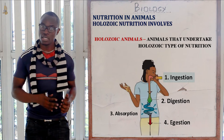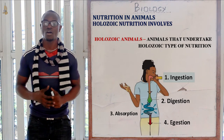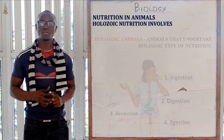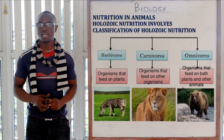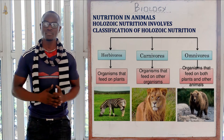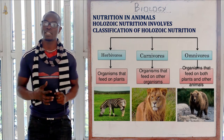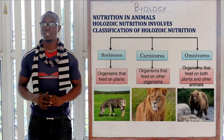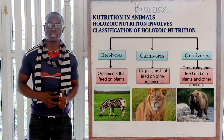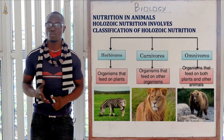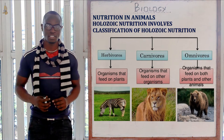Organisms under the holozoic mode of nutrition are called holozoic organisms. They are classified according to the type of food they mainly ingest. The classifications include herbivores, which mainly feed on green plants or vegetation; carnivores, which mainly feed on flesh; and omnivores, such as the pig and human beings, which feed on both vegetation and flesh.